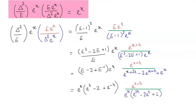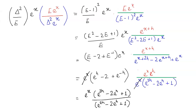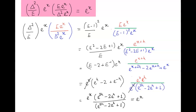Taking eˣ common in the first and third part, we can easily simplify them further. The term e^x gets cancelled and what remains are three values. Now e^(x+h) can be written as eˣ times eʰ. Taking eˣ outside and multiplying the bracket by eʰ, the resulting equation cancels with the previous denominator term and what we are left with is e^x — and this is what we had to prove.